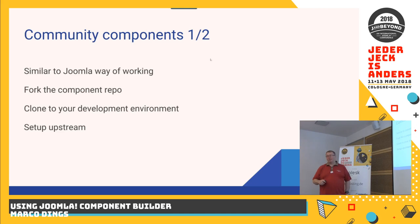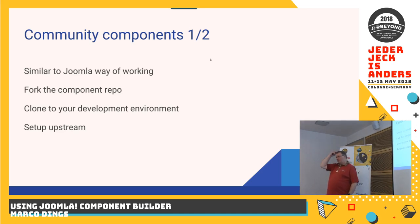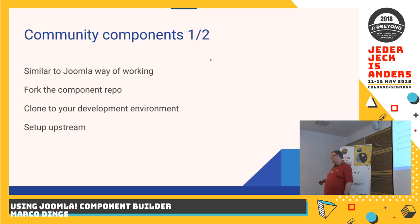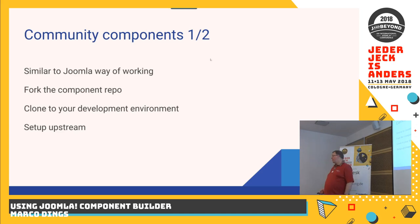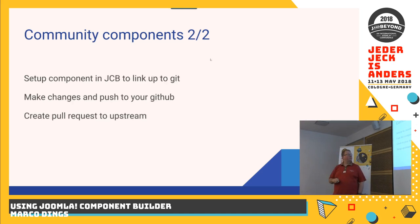You have the upstream repository, fork it to your local GitHub, clone it to your local development environment, make changes to — for example — the question and answers component, set up your upstream, push it, and make a pull request. The pull request may or may not get accepted, and then you can download the updated component again. You can also set up that workflow locally.